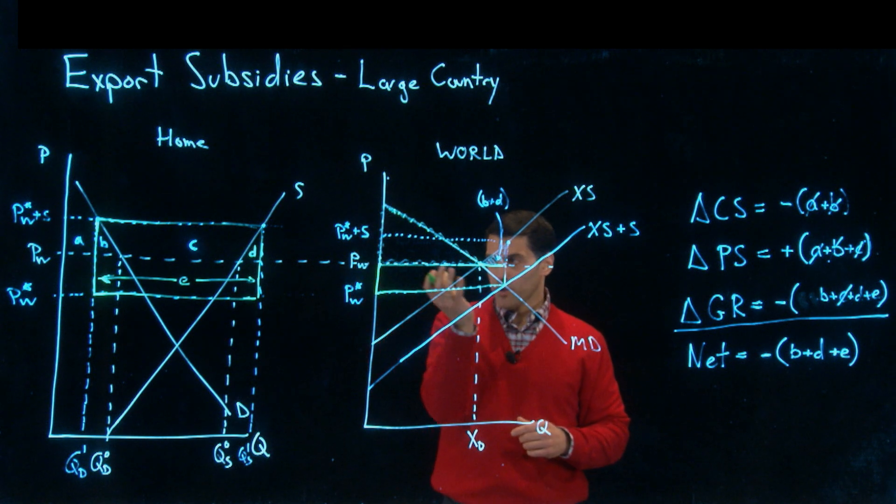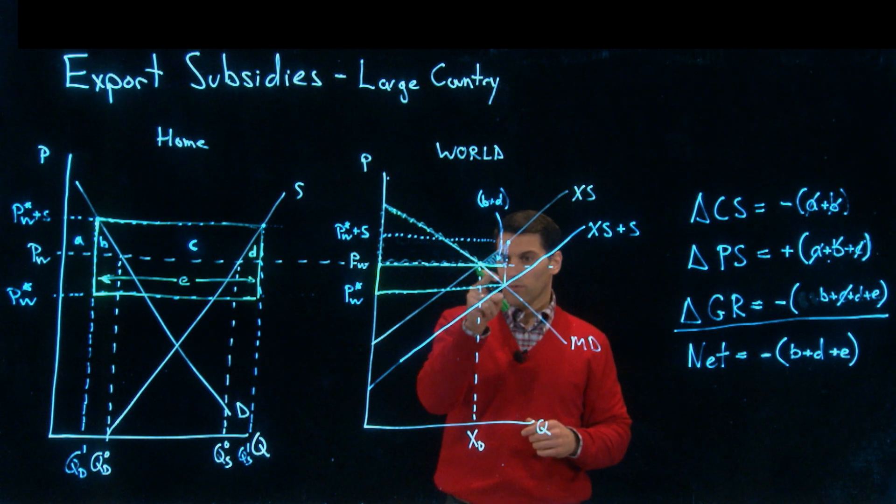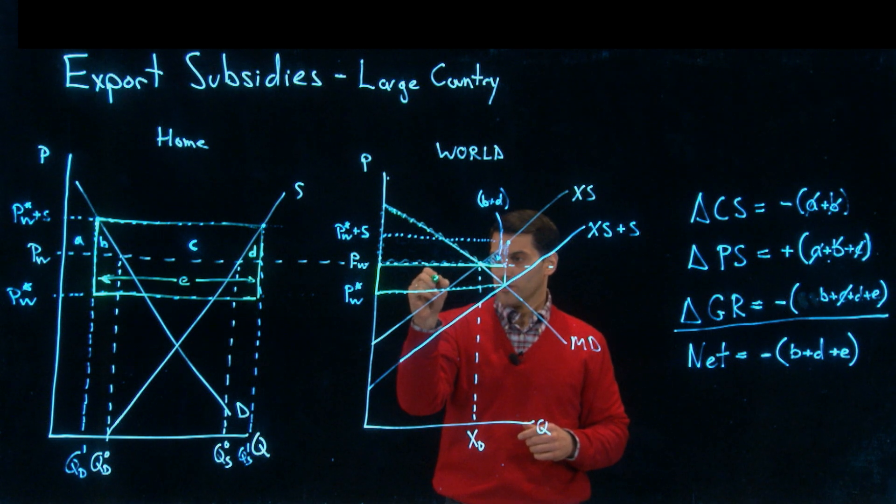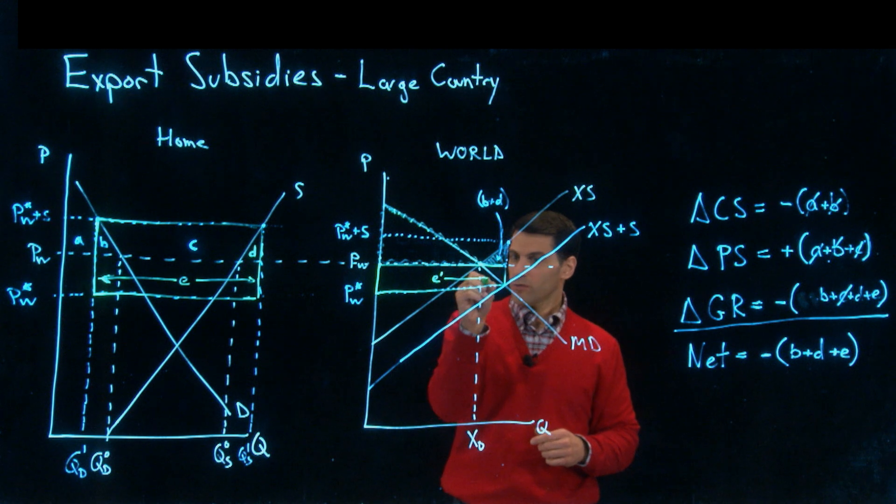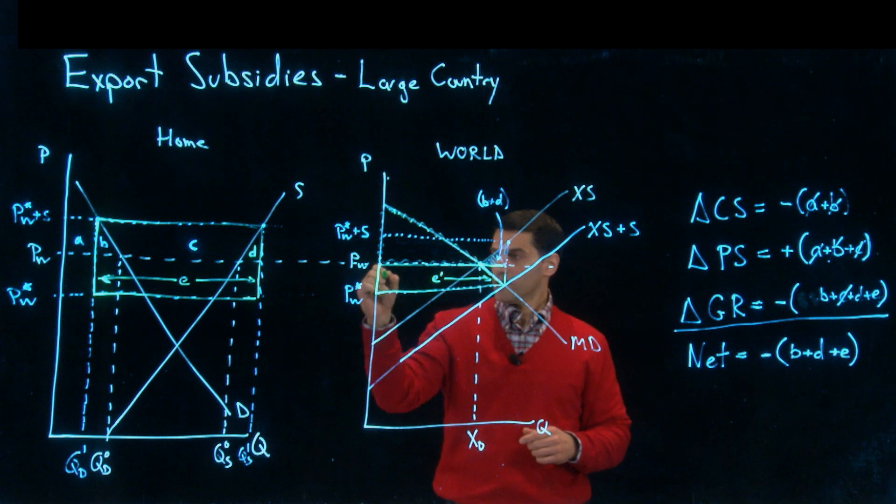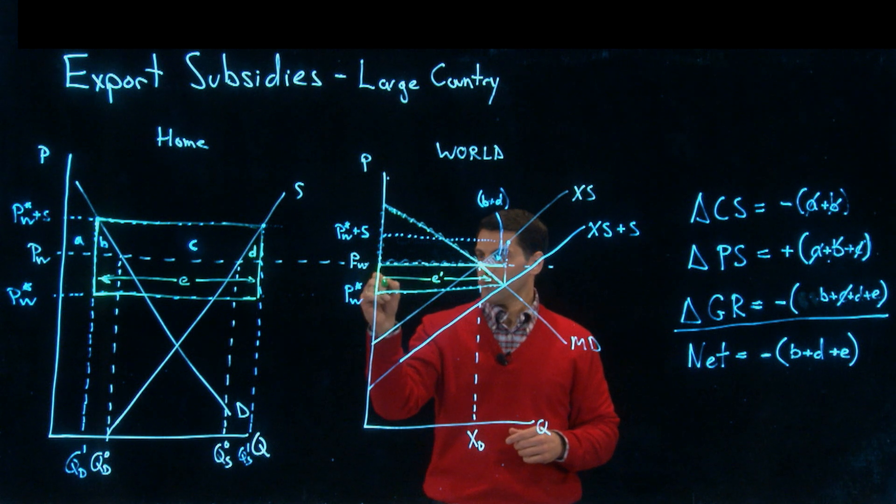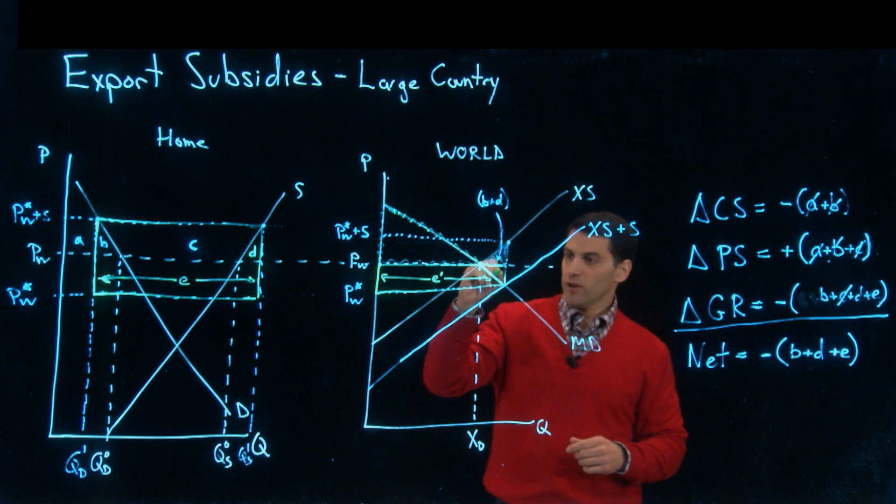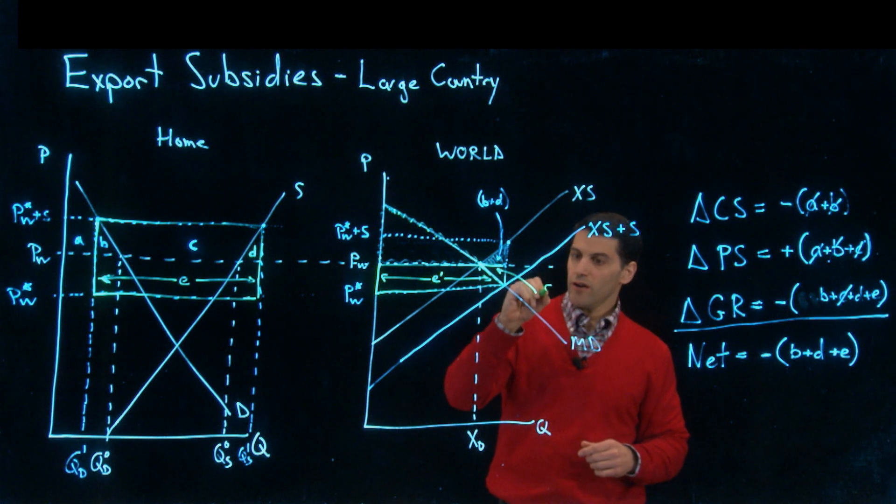Now when the world price falls to PW star, we're adding in this area that we'll label E prime, which is down here. E prime is all of this, and this triangle down here we'll call that F.